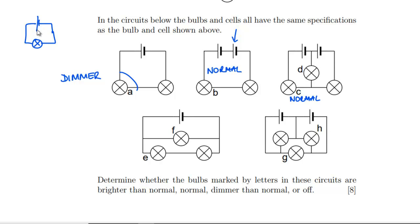For bulb D, think about the potential as you go around the circuit. Say we start at a corner at zero, go up one through one cell, up one through the second cell — we've got two units to lose on the way around. We go down to one here as we move around in the conventional current direction. The added connection in the middle of the picture joins two points at the same potential — one to one — so there's no potential difference across it. It's not affecting anything.